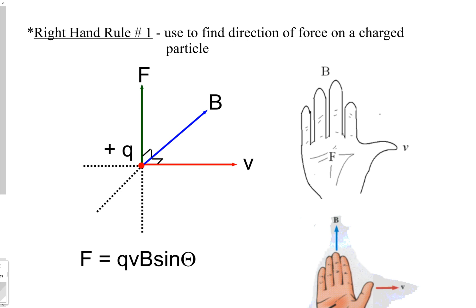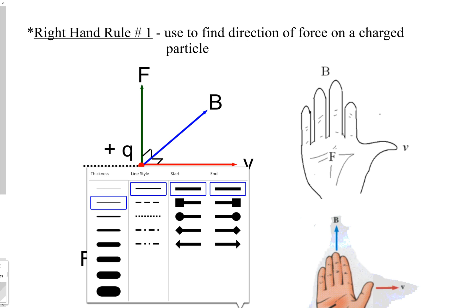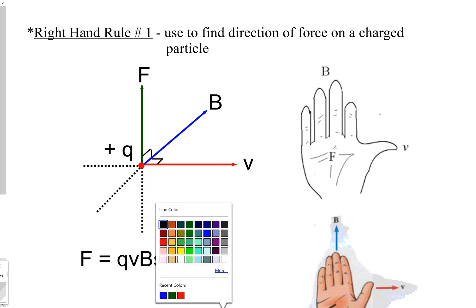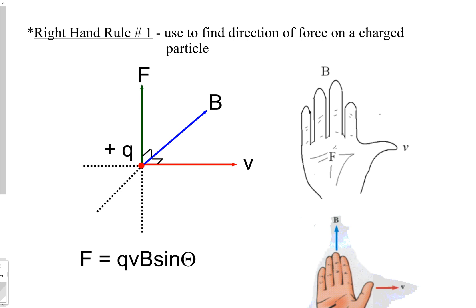Welcome back. We're continuing the series on magnetism and electricity — these are a couple of bonus videos in case your teacher wants to cover it. Today we're going to look at what's known as Right Hand Rule Number One and Right Hand Rule Number Two.